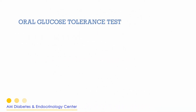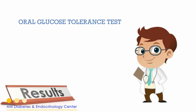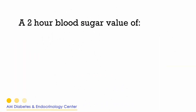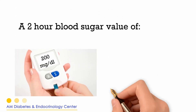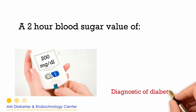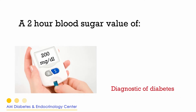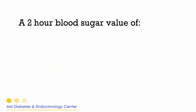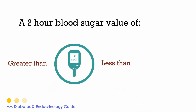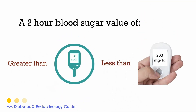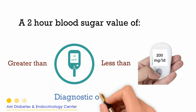Oral Glucose Tolerance Test Results: a 2-hour blood sugar value of greater than 200 mg per deciliter is diagnostic of diabetes. A 2-hour blood sugar value of greater than 140 and less than 200 mg per deciliter is diagnostic of prediabetes.